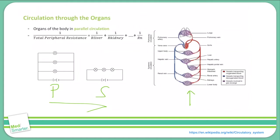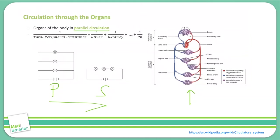The take-home point of this video is that the blood supplies to the major organs of the body are arranged in a parallel circulation. Thinking back to our video on resistance, we can calculate the resistance of vessels in parallel by adding up the inverse of the individual resistances to get the inverse of the total resistance. Adding vessels in parallel tends to decrease the total resistance of your system.